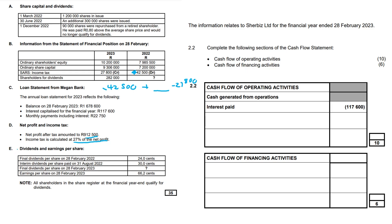Wait — that's after tax, not before tax. Don't just trust everything you hear. If it were before tax, you could simply multiply the amount by 27%. But this figure is after tax, meaning the 27% has already been removed.